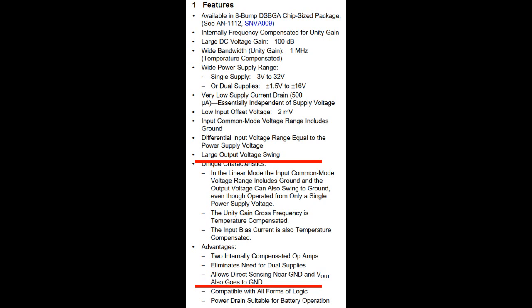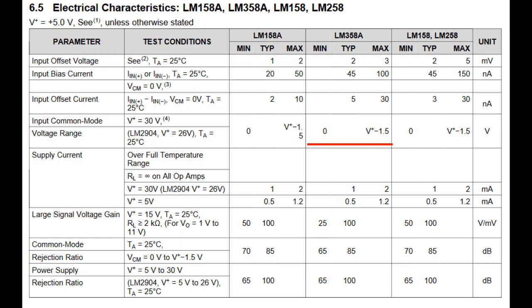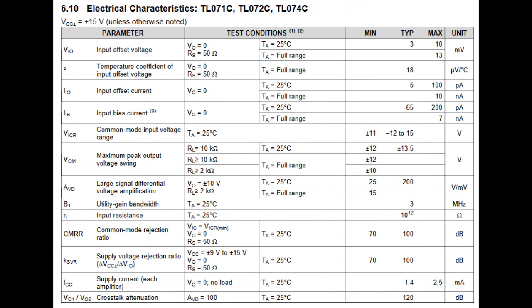To test these Chinese op-amps we will be using the output swing as parameter. The datasheet for the LM358 shows how the output can go all the way to ground.